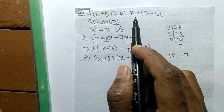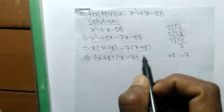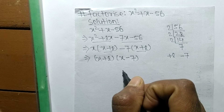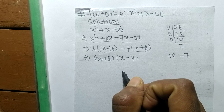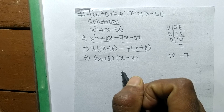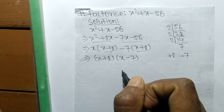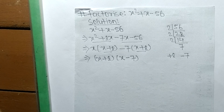So x plus 8 and x minus 7 are the factors of x squared plus x minus 56. That's all for today. If you have any questions related to math and science, comment below and we shall provide a video solution. Thank you.